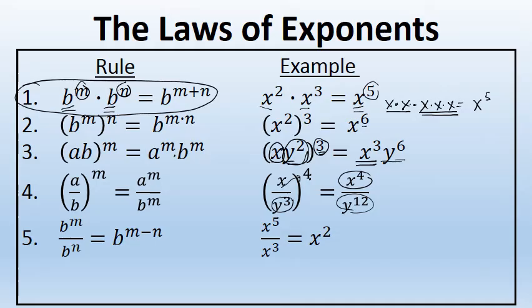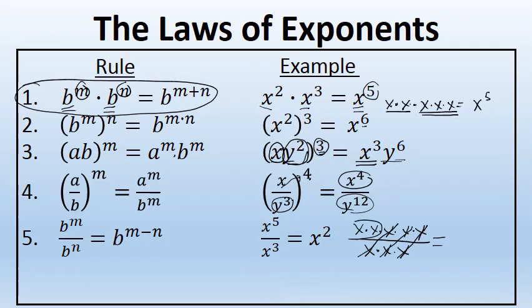What's happening here is we have x to the fifth power — 5 factors of x in the numerator. And in the denominator, there are three factors of x: x times x times x. Three of the factors in the denominator can be divided away with three factors in the numerator, each becoming one, and all that you're left with is two factors of x in the numerator — x squared. A simpler way to accomplish this is to simply subtract the exponents.